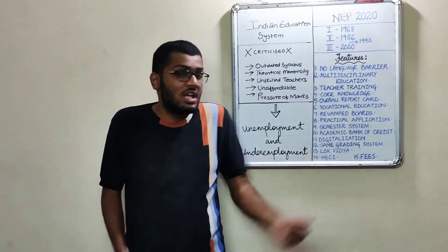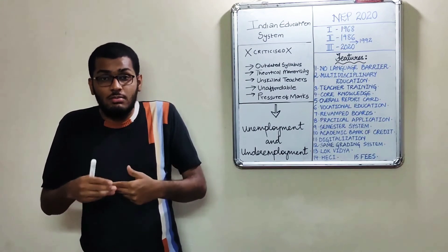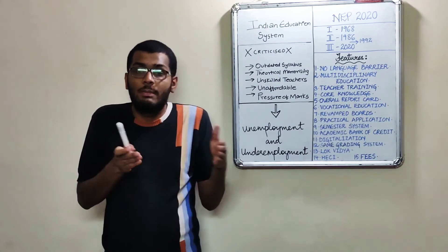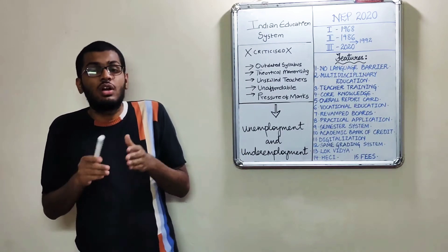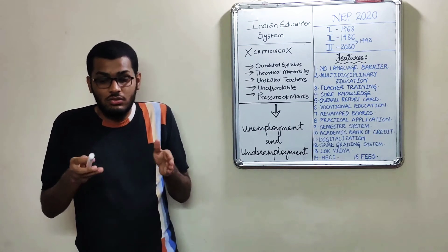Number seven is revamped structure. Our system of 10 plus 2 has been planned to change into 5 plus 3 plus 3 plus 4. So 1st to 5th is preschool, 6th to 8th is middle school, and 9th to 12th is gonna be high school. So it's divided into these terms.